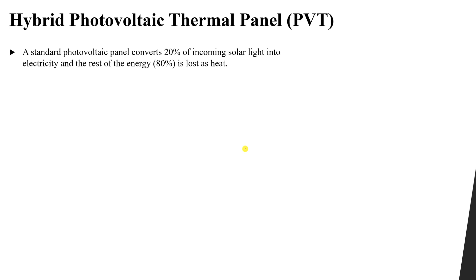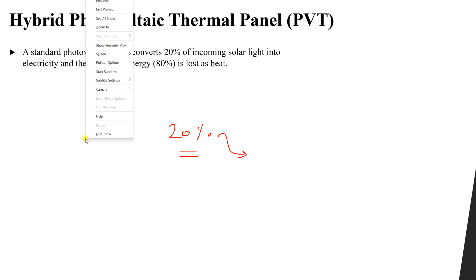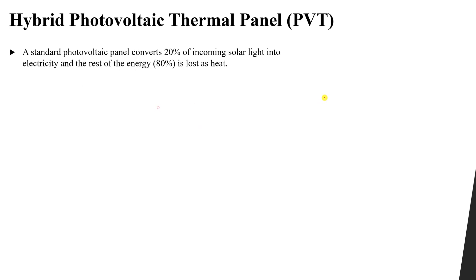A standard photovoltaic panel converts 20% of the incoming solar light into electricity, and the rest of the energy is dissipated or lost as heat energy. So for example, if we have a PV panel with an efficiency of 20%, it will convert only 20% of the sunlight and the rest will be converted into heat energy going to the PV cell.